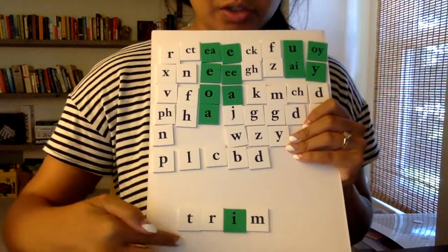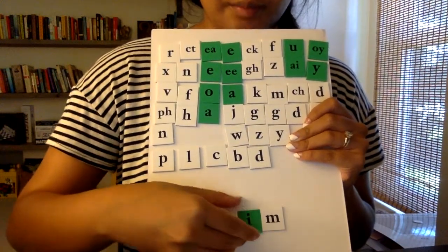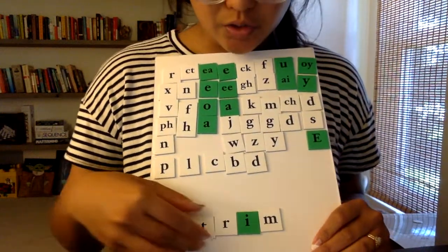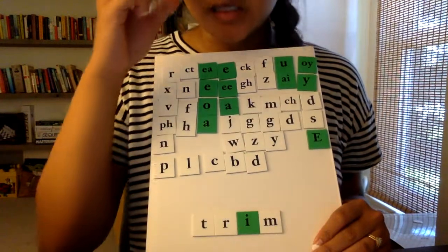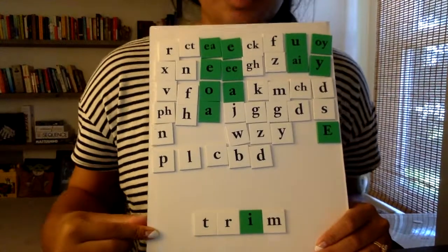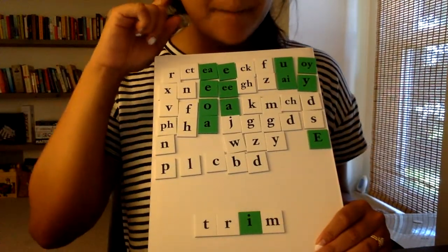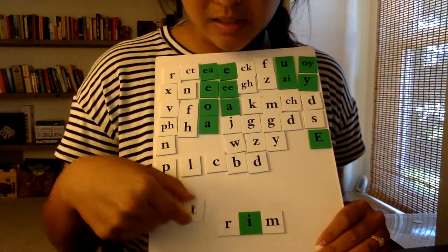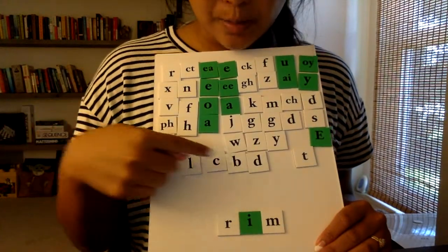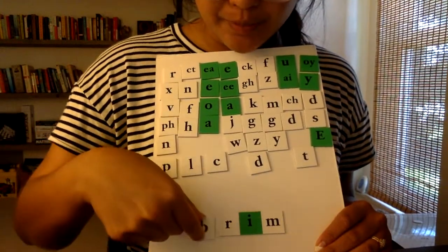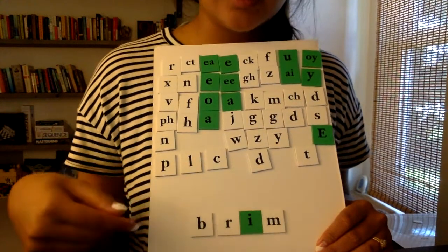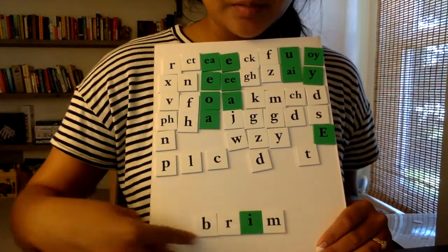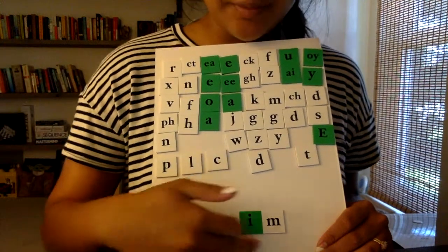So if I want to change the word trim into the word 'brim', where do I need to change? What needs to stay the same? T-rim, brim. I hear a B sound at the beginning instead of a T. So that tells me I'm going to take my T away and I'm going to use the B. Let's sound it together: B, rim — 'brim'. That's the word that I was looking for.